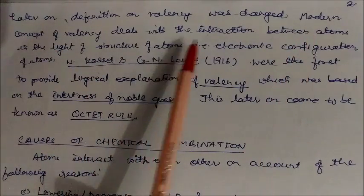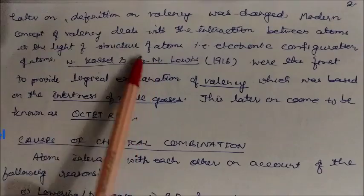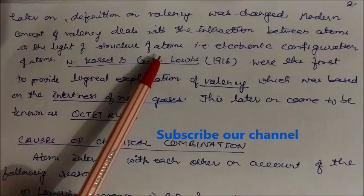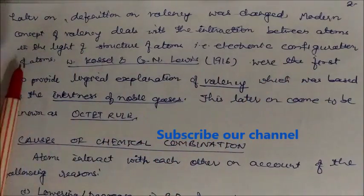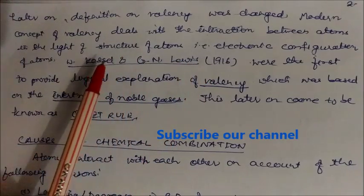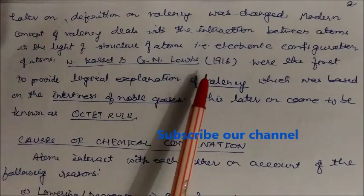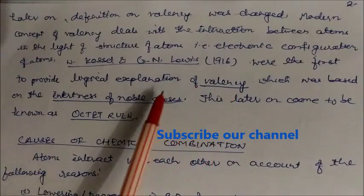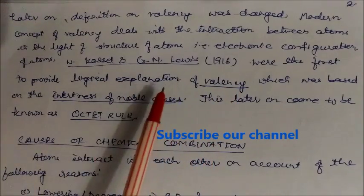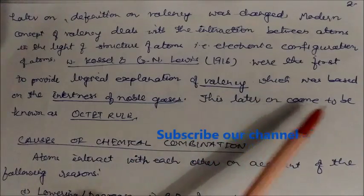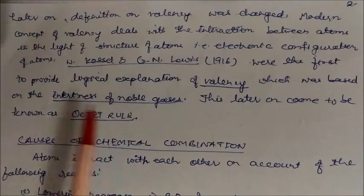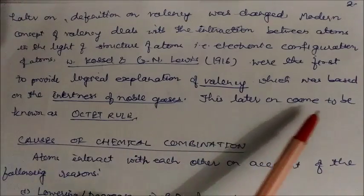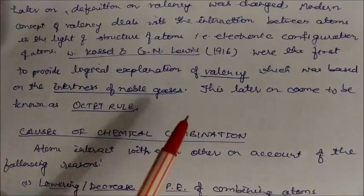The modern concept of valency deals with the interaction between atoms in the light of the wave structure of atoms — taking into consideration the electronic configuration of atoms. This concept was put forward by Kossel and Lewis in 1916. They were the first to provide a logical explanation of valency, based on the inertness of the noble gases, which later came to be known as the octet rule.